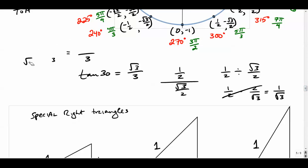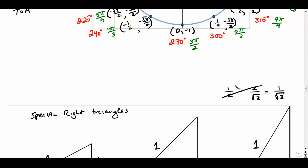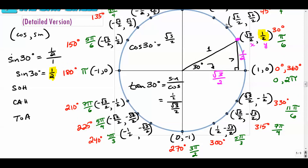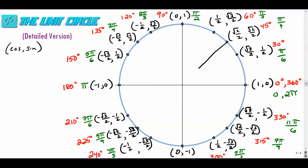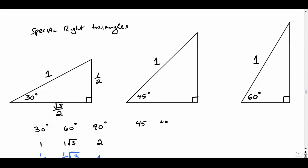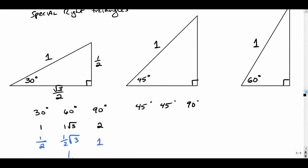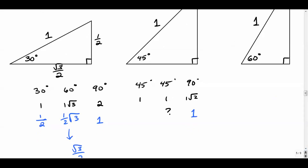Now let's go to the 45-45-90 triangle. It's an isosceles right triangle, meaning both legs are the same length. The hypotenuse — the radius of the unit circle — is 1. The standard ratio of sides in a 45-45-90 is 1 : 1 : radical 2. So if a leg is 8, the hypotenuse is 8 radical 2. In our case, the hypotenuse is given as 1, which poses a challenge for finding the legs.